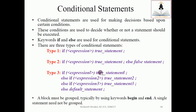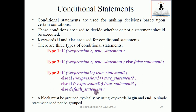In the nested if-else, the first condition is checked. If true, true statement one is executed. If false, it goes to the else part where a second condition is checked — that's why we call it nested. If condition two is true, true statement two executes; else a third condition is checked. If true, true statement three executes; otherwise the default else statement is executed.